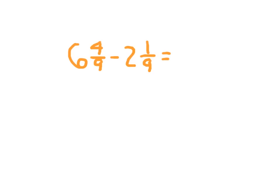For this problem here, I have six and four-ninths minus two and one-ninth. And I'll show you why it might be a good idea to work with the fractional part first, the four-ninths minus the one-ninth. And the reason behind that is then we'll know whether or not we would need a regroup. Can we take away one-ninth from four-ninths? And the answer to that is yes.